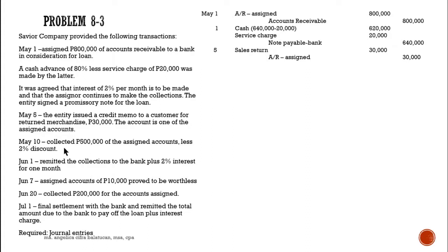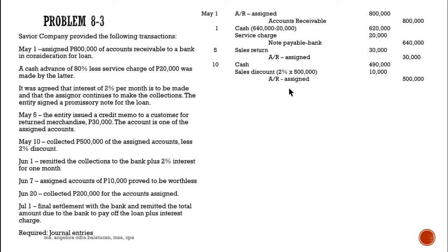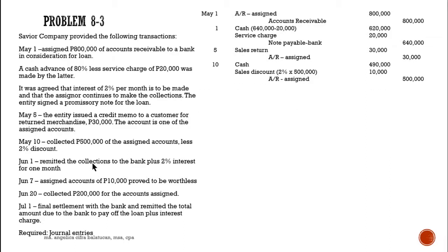On May 10, there is a collection of 500,000 of the assigned accounts minus a 2 percent discount. The sales discount is 2 percent of 500,000, which is 10,000. Credit AR-assigned 500,000. The cash collected is 490,000.